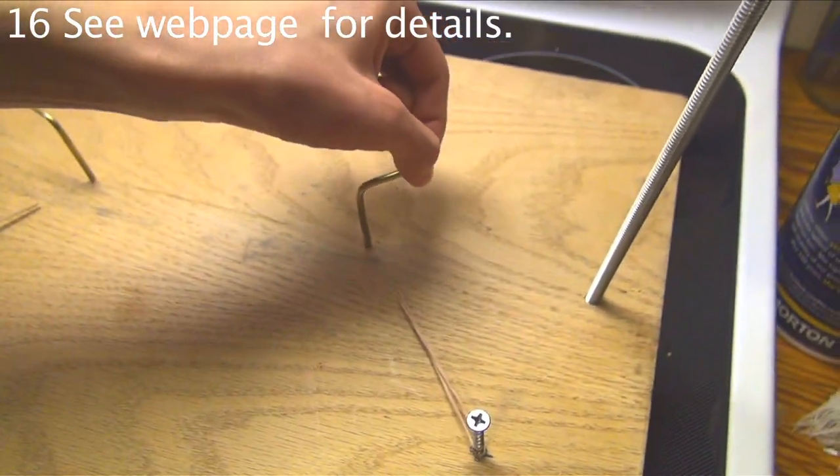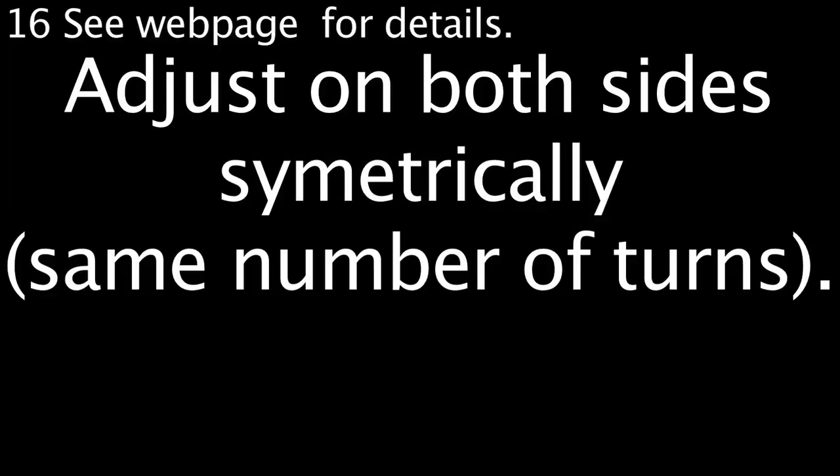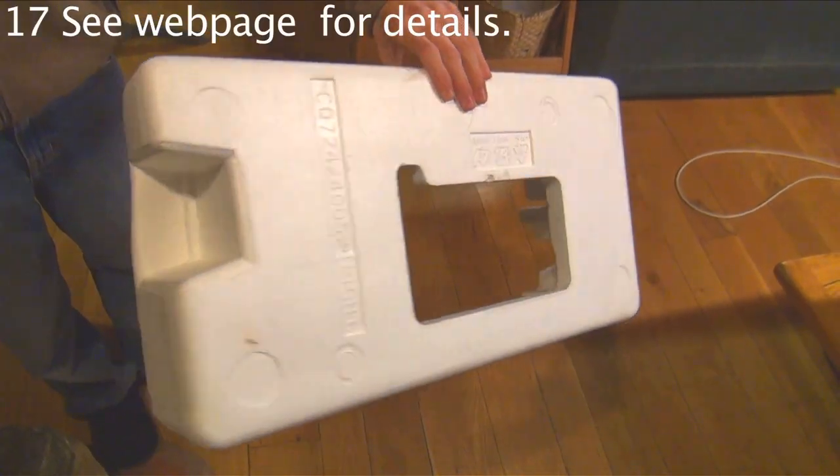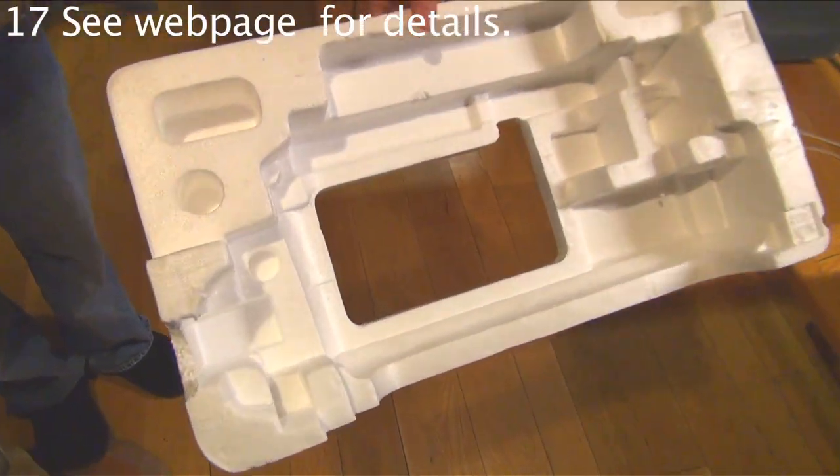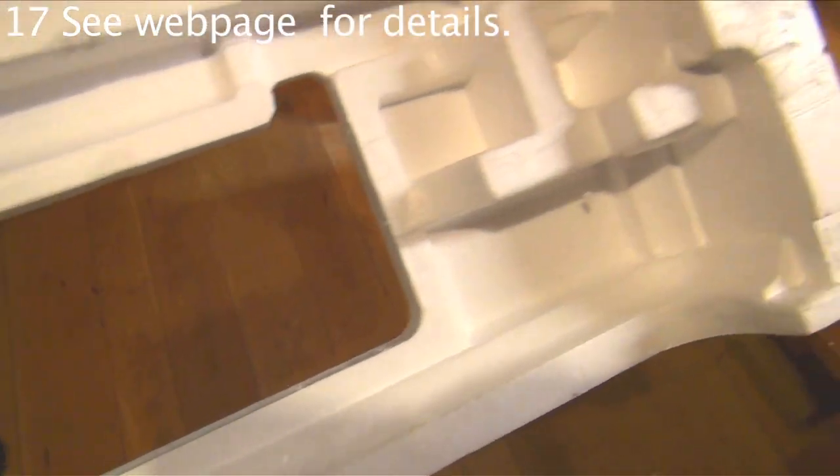When you adjust to cut thicker or thinner, turn both sides the same amount. I'm going to start with the worst stuff, molded packaging foam. It's usually so hard it cuts slowly and it's heavy as foams go.